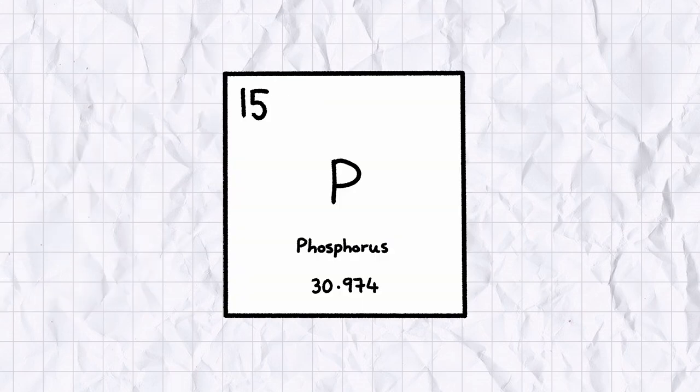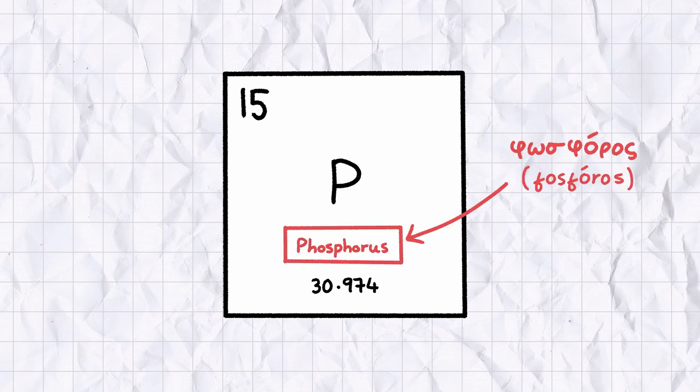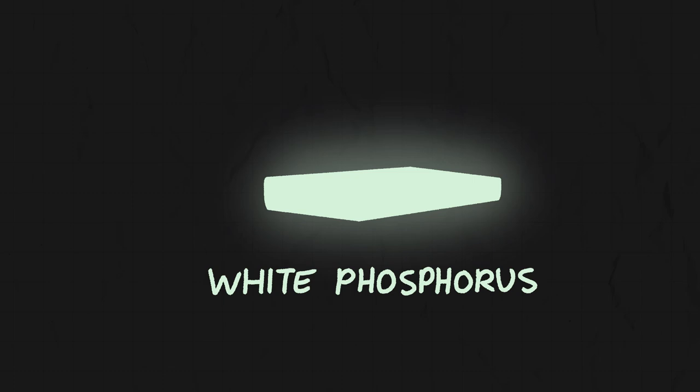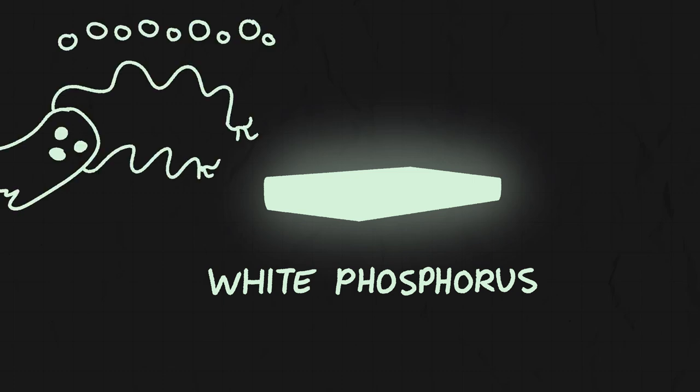Phosphorus is the second of the group 15 elements, and its name translates to light-bearer in ancient Greek. So called because white phosphorus, its most common allotrope, lights up in the dark when exposed to oxygen with an eerie green glow.